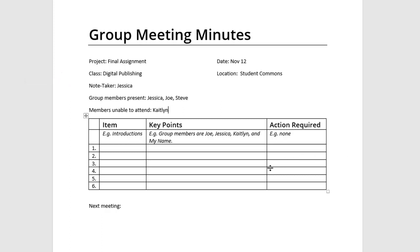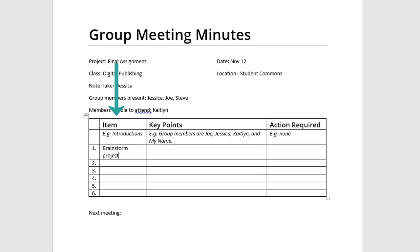Now you can add in the notes of the discussion as it happens. Write the general topic in the column labeled item. For example, let's say the item is brainstorm project topics. If you created a meeting agenda before the meeting, you can use the items on the agenda as a guide.